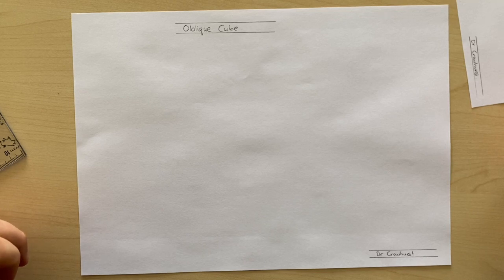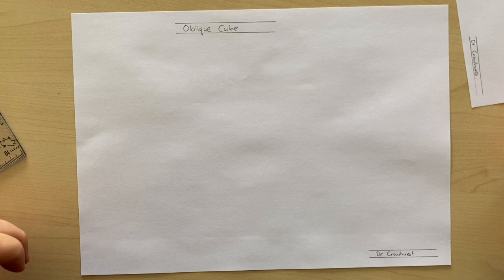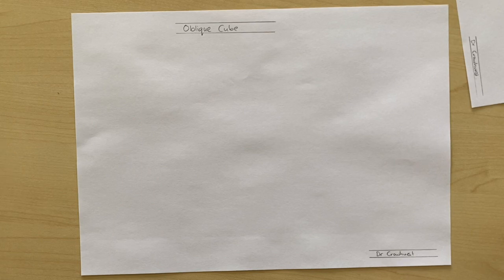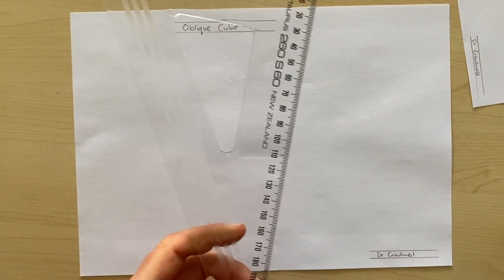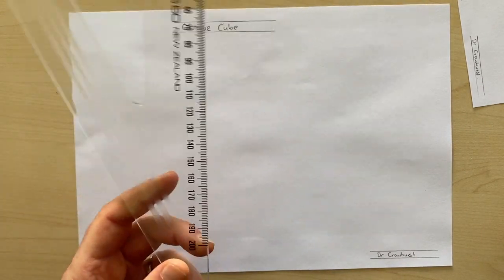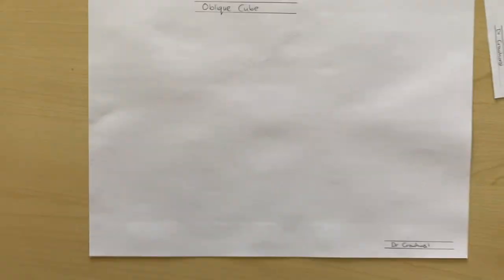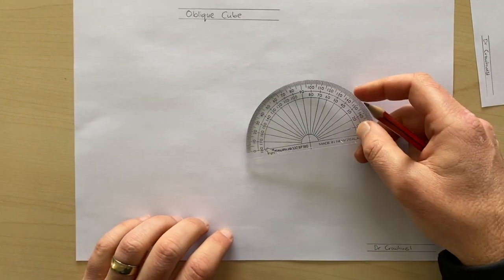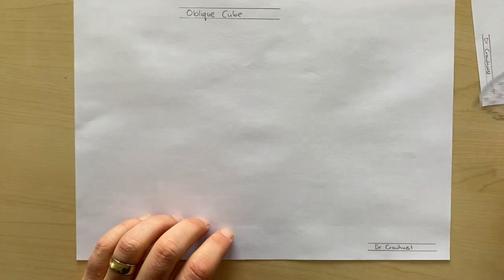Now previously we've done oblique drawing using grid paper which is very helpful to get our 45 degree angles, but today we're actually going to use just a normal ruler and a protractor. You can use any type of straight edge as your ruler. Today I'm using an isometric ruler but it could just be a normal ruler, but you'll also need a normal protractor like that.